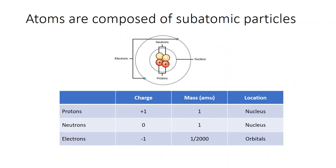The basic unit of life is an atom. Atoms are made up of subatomic particles called protons, neutrons, and electrons. Protons and neutrons reside in the nucleus of an atom. Protons have a plus-one charge and a weight of one atomic mass unit.